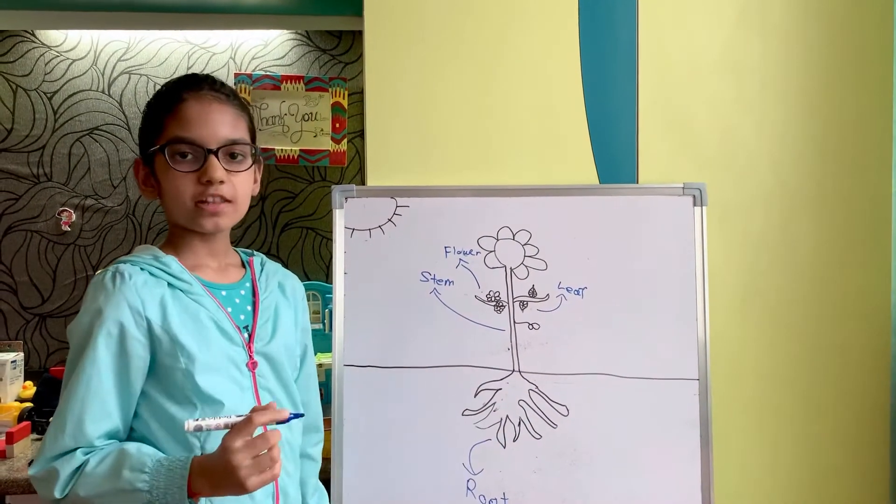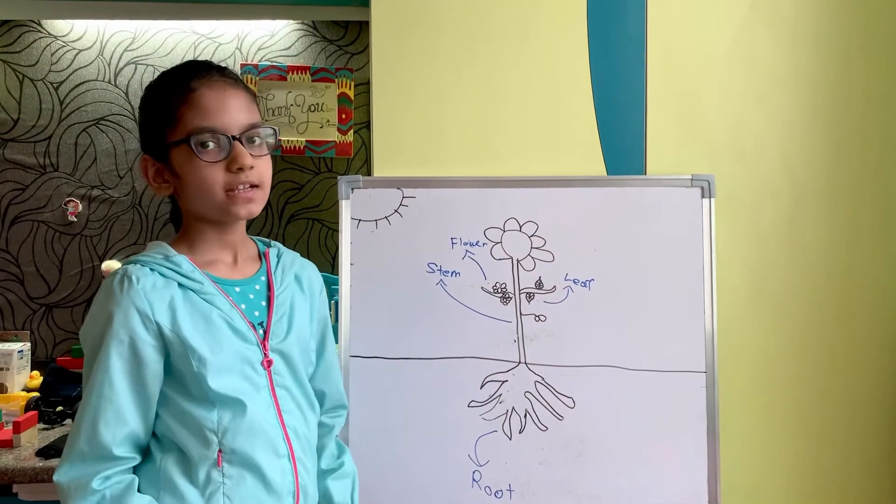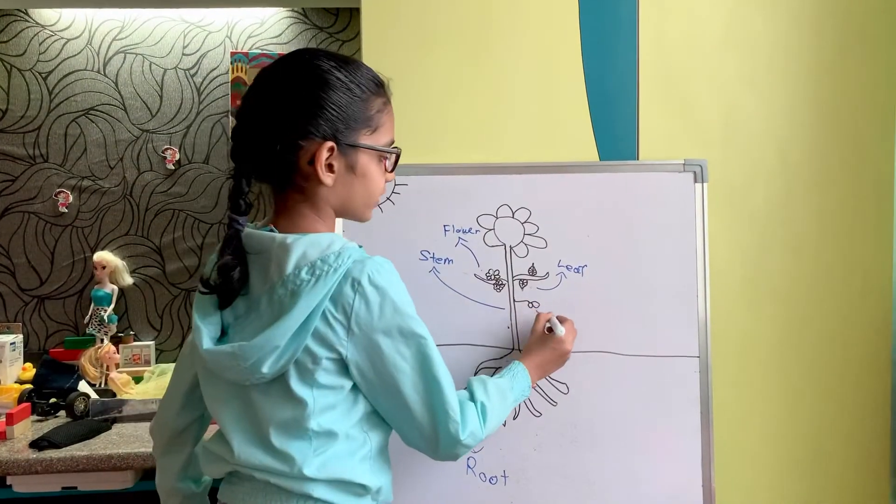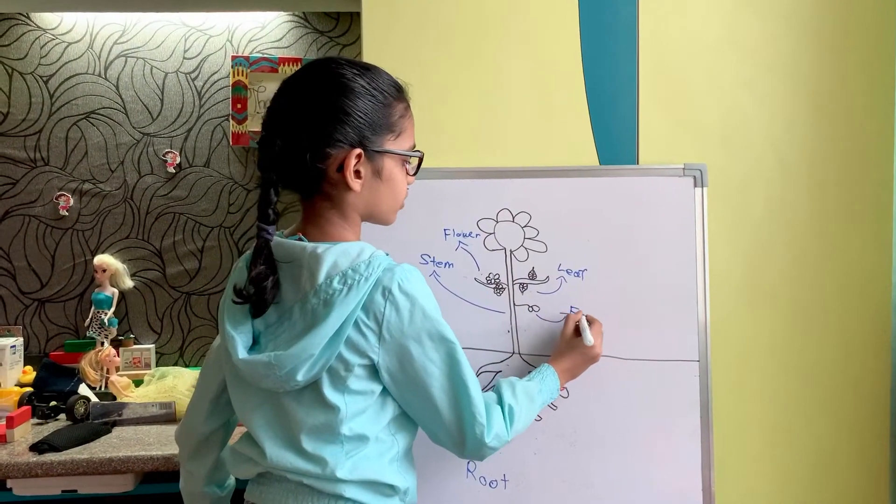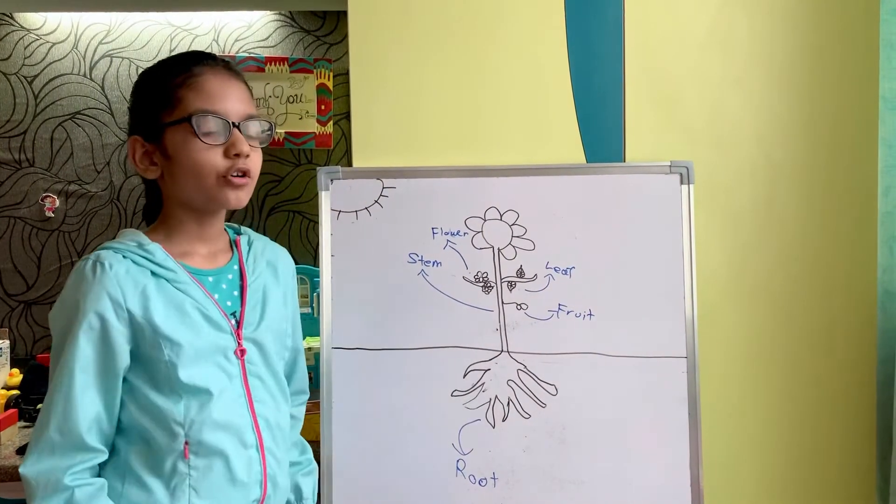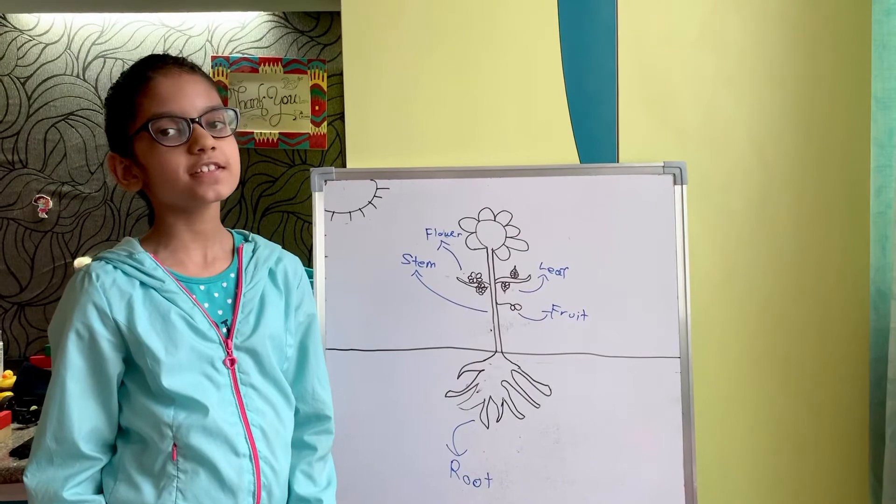The leaf is called the kitchen of the plant as it prepares food for the other parts of the plant. Now the last part is the fruit. The fruit bears seeds. Now shall we study photosynthesis?